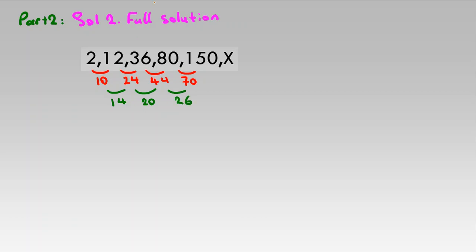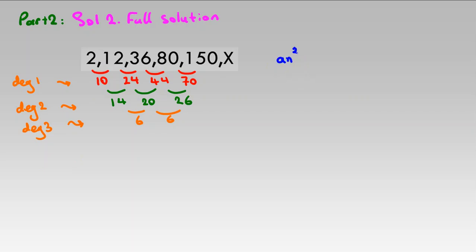Again they are not equal. Next level: 20 minus 14 is 6, and 26 minus 20 is 6. Here we see equal numbers. If we reach equal numbers at the first difference level it is degree 1, at the second level it is degree 2, and at the third level it is degree 3. So our sequence is degree 3: a·n³ + b·n² + c·n + d.